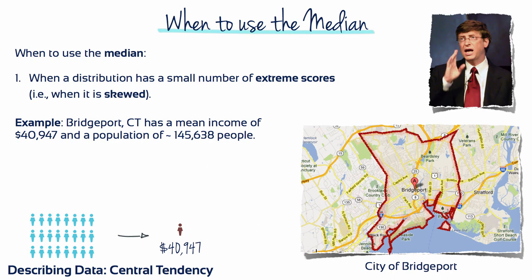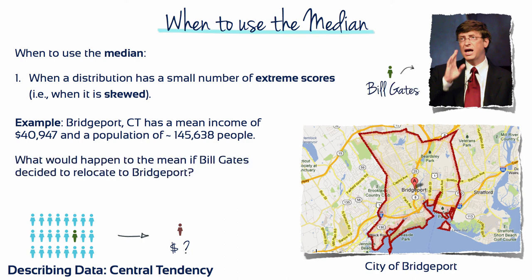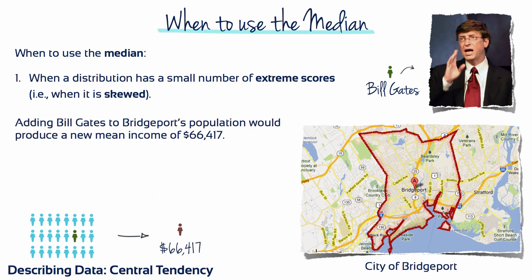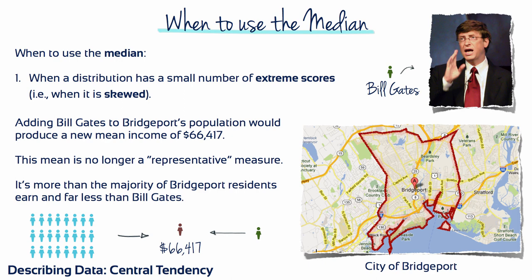For example, according to the 2011 census, Bridgeport, Connecticut has a mean income of $40,947 and a population of roughly 145,638 people. What would happen to the mean if Bill Gates decided to relocate to Bridgeport? Bill Gates has an annual income of $3,710,000,000. Adding Bill Gates to Bridgeport's population would produce a new mean income of $66,417. This mean is no longer a representative measure. It's more than the majority of Bridgeport residents earn, and far less than Bill Gates.